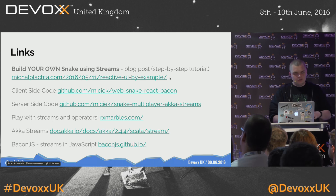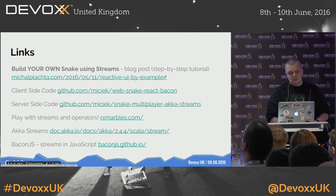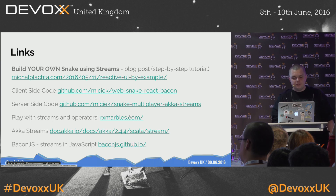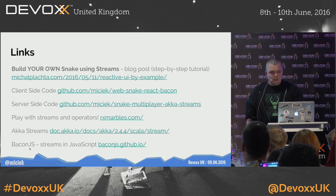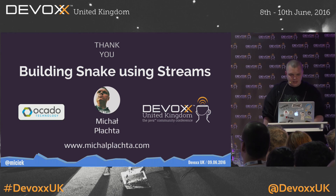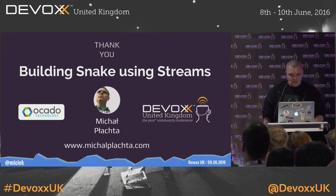The links: there's a blog post where you can step-by-step build your own snake. There's client code and server code on GitHub. You can play with streams and operators using Rx Marbles. Akka Streams was used on the server and Bacon.js is the streams library used on the front-end. I'll tweet all links and slides in about five minutes. I'm Michal, this is my blog and my Twitter handle. Thank you very much for listening!